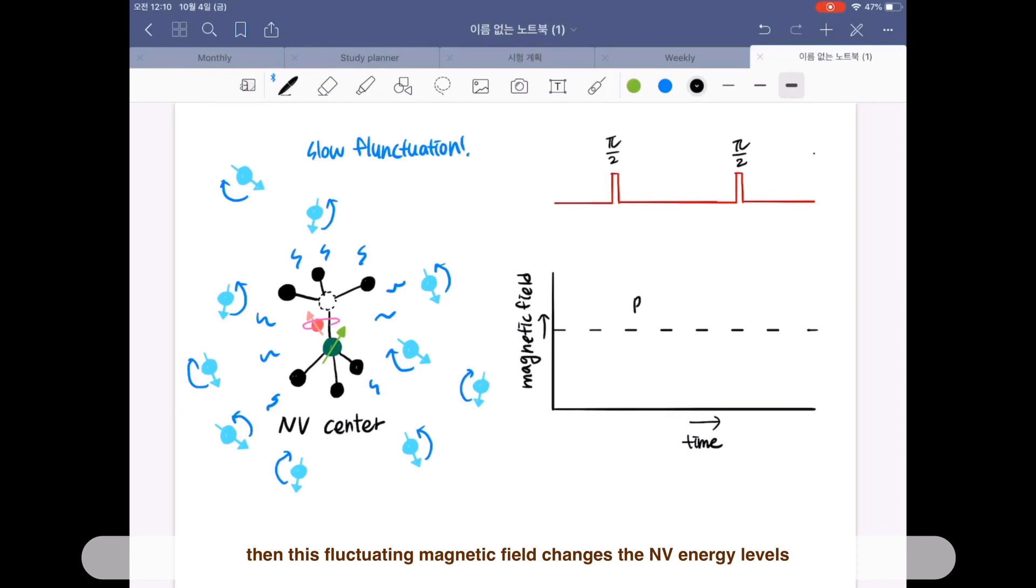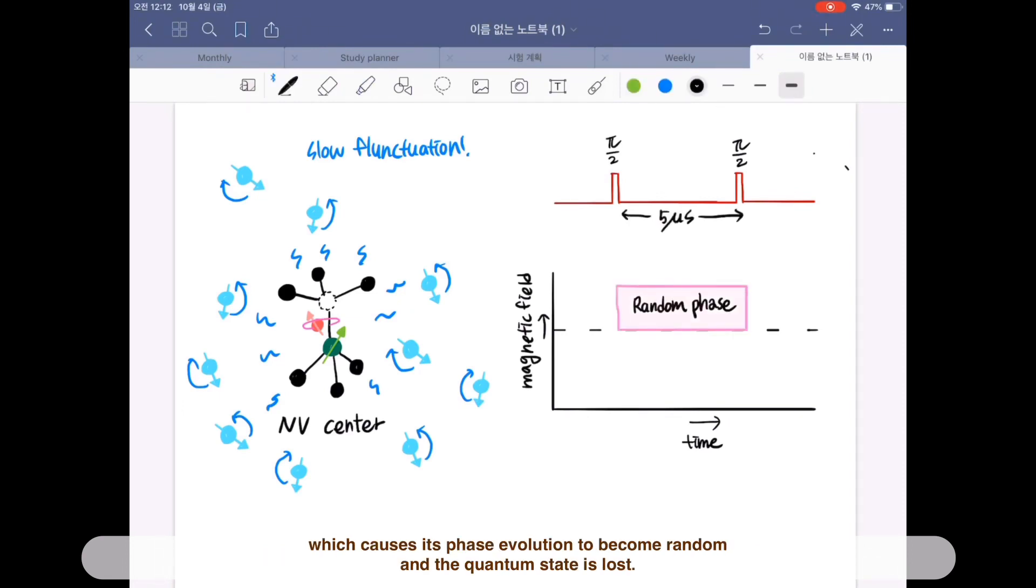If NV center is in superposition state, then this fluctuating magnetic field changes the NV energy levels, which causes its phase evolution to become random and the quantum state is lost. This dephasing time is only about 5 microseconds.